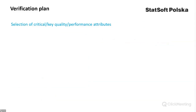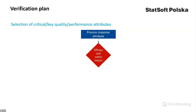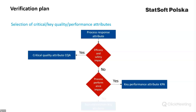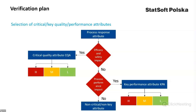How to select critical, key quality and performance attributes? Firstly, we can ask if the attribute impacts efficacy and safety of the product. If yes, it is a critical quality attribute. If not, we can ask if the attribute impacts process performance. If yes, it is a key performance attribute. If not, it is neither a critical nor key attribute. The critical and key attributes can be further divided into attributes of high, medium or low impact.